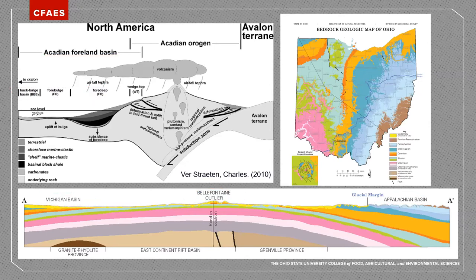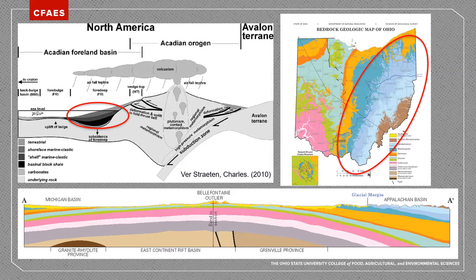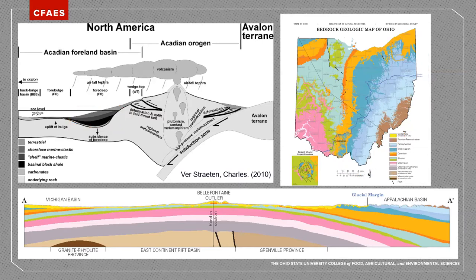Over many more millions of years, clastic sediments such as shale and sandstone eroded from the Appalachian mountains to the east and filled that fore-deep region, forming the Allegheny Plateau which covers much of eastern Ohio. This topographic feature served as a barrier to advancing glacial ice sheets much later in the Quaternary period, leading to the formation of two fundamentally different physiographic regions across the state: a glaciated region and an unglaciated region. A thin layer of Quaternary age glacial deposits sits on top of the older bedrock units.